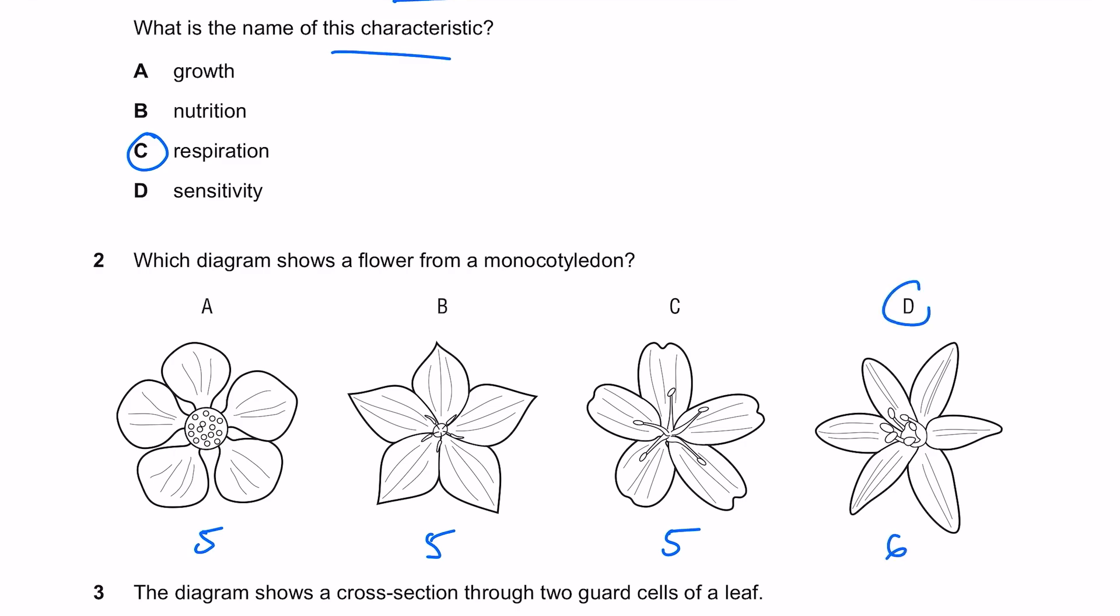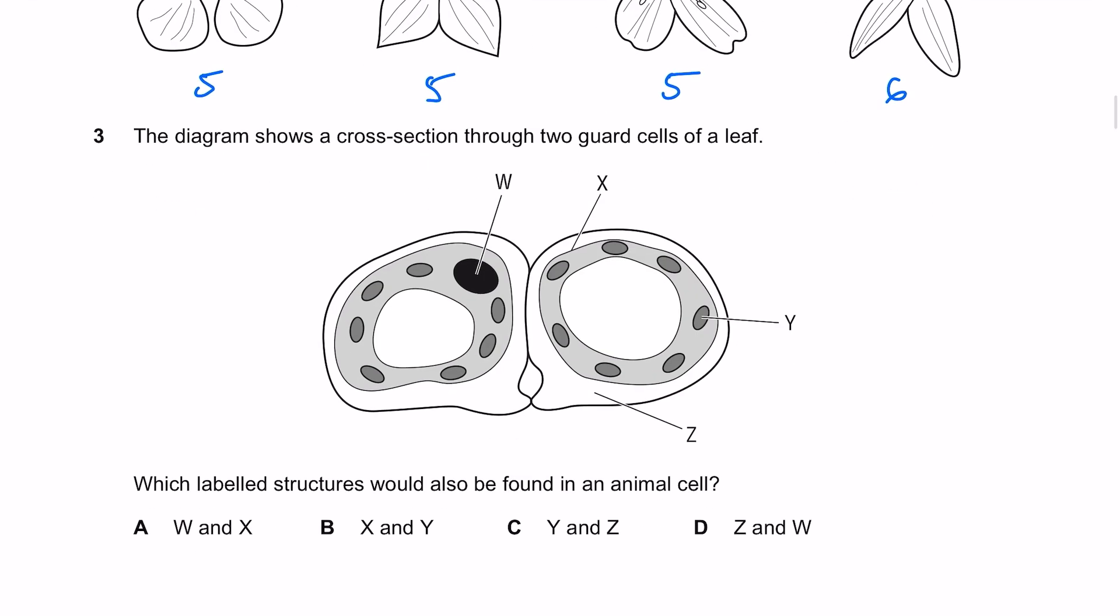The diagram shows a cross-section through two guard cells of a leaf. Which labeled structures would also be found in an animal cell? Let's label all of these things - that's a chloroplast, cell membrane, nucleus, and cell wall. You'd find W and X in an animal cell - the nucleus and the cell membrane. The answer here is A.